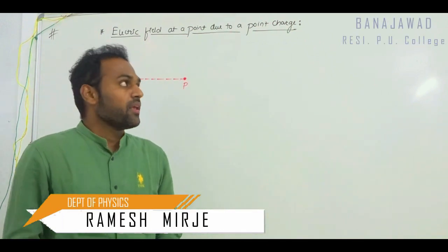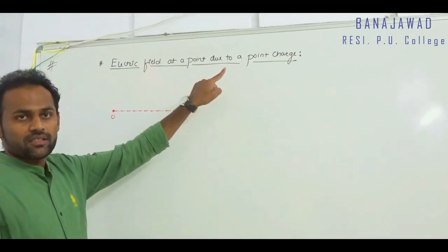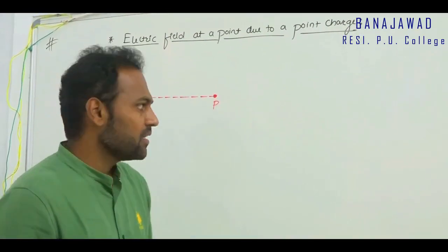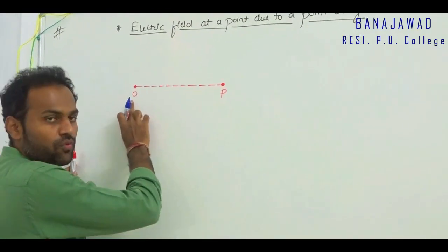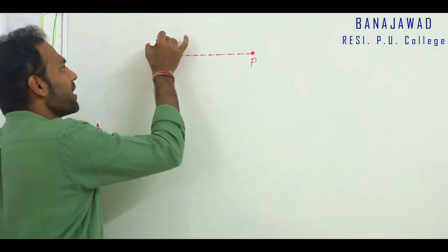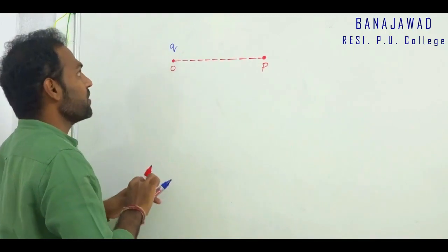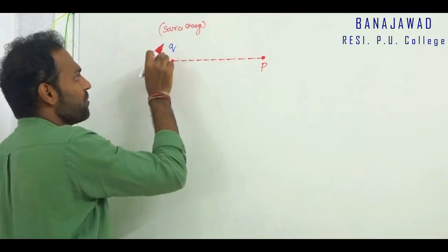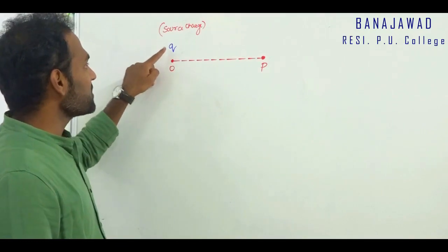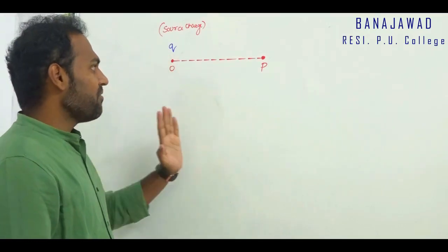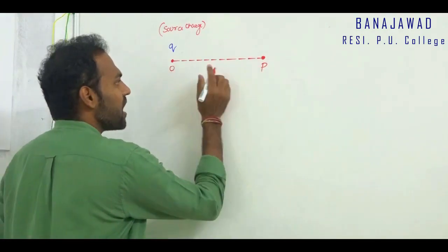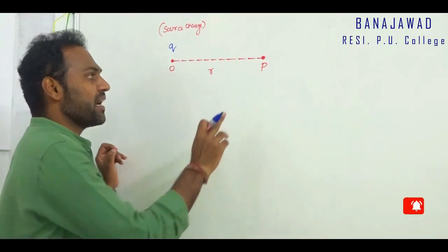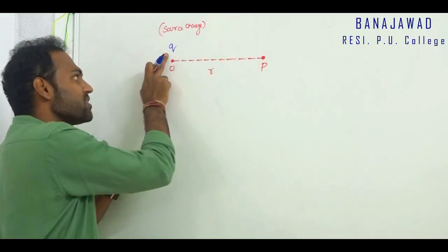We will go for a derivation of electric field due to a point charge at a point. At one point we have to find out what is the electric field due to a point charge. I have taken two points: one is O and the other is P. At point O let me place a charge called Q. Q is the source charge, meaning it will be producing an electric field. Point P is at a distance R from O. We have to determine what is the electric field at point P due to the point charge Q placed at O.